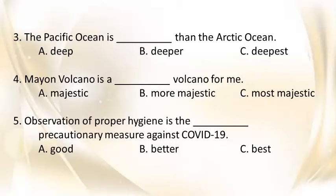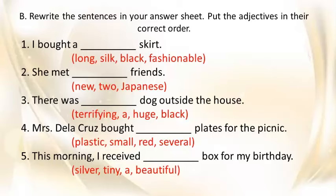B. Rewrite the sentences in your answer sheet. Put the adjectives in their correct order. 1. I bought a blank skirt — long, silk, black, fashionable. 2. She met blank friends — new, two, Japanese. 3. There was a blank dog outside the house — terrifying, huge, black. 4. Mrs. De La Cruz bought blank plates for the picnic — plastic, small, red, several. 5. This morning I received a blank box for my birthday — silver, tiny, beautiful.